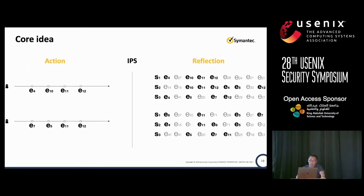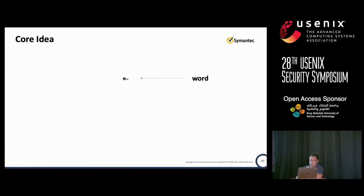Our core idea is pretty straightforward. We will see the action from the attackers — it is not observable, and I have to stress that point — and then we have the IPS system, and we will see the reflection of the attackers' action. That's the very key observation for us. To make things simple, we think that per security event, we treat it as a word. Per endpoint telemetry data, we treat it as a sentence.